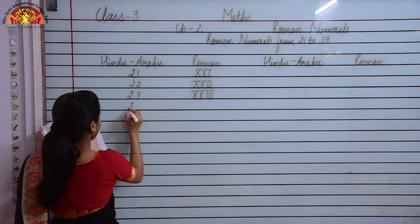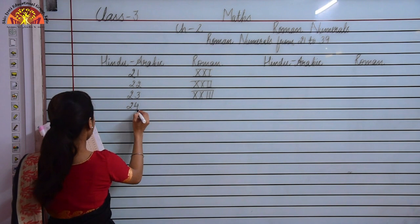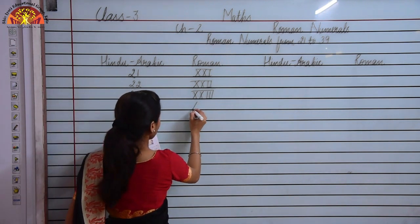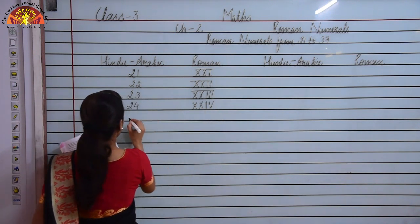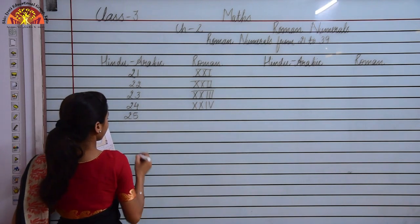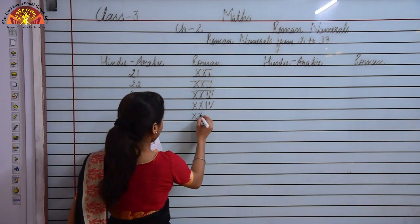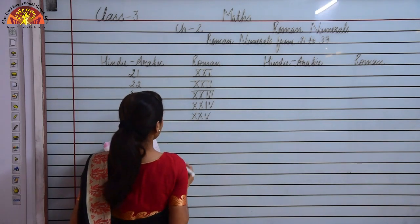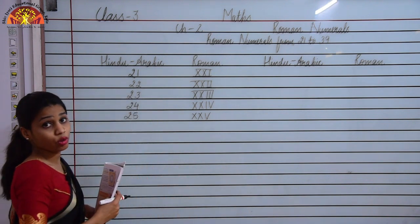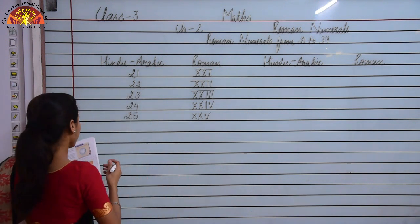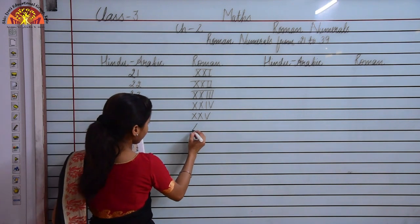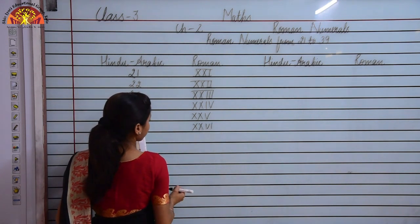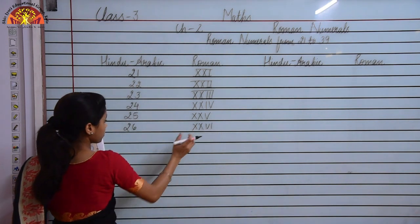Now how will I write 24? I will write XX and then add IV to it. How will I write 25? I will write XX and then add V to it. Now similarly to write 26, I will write XX and then add VI to it. So this represents 26.